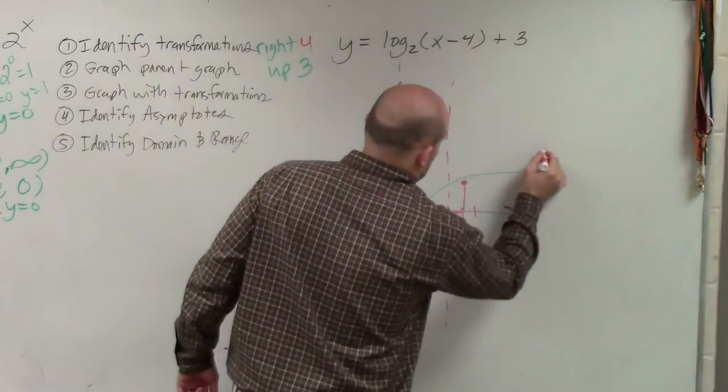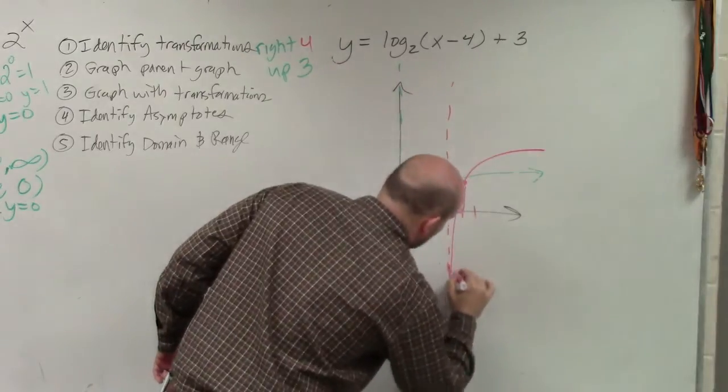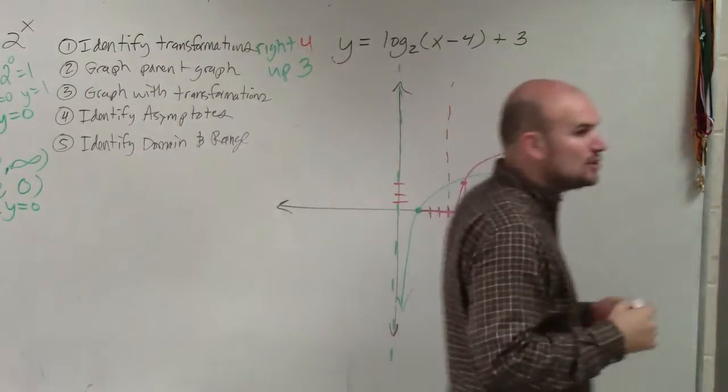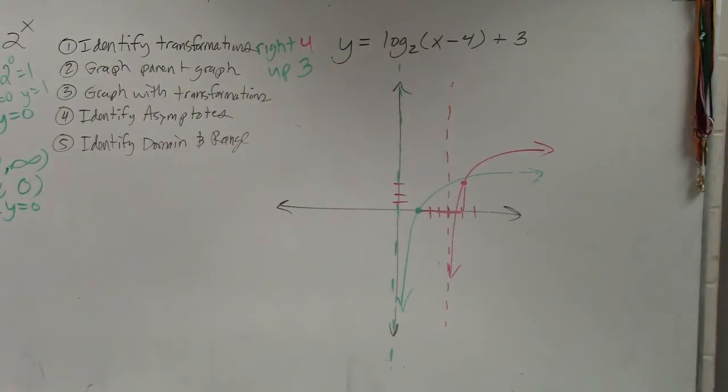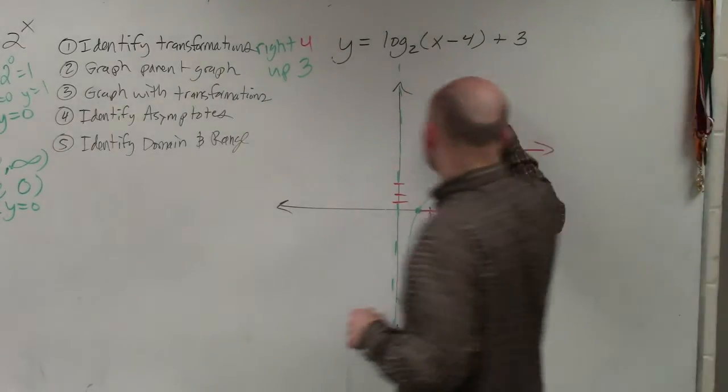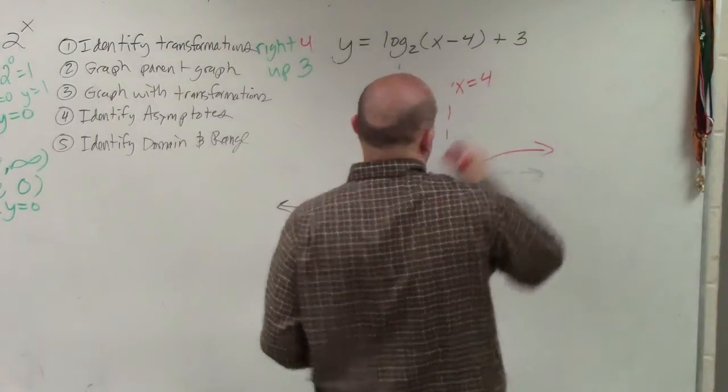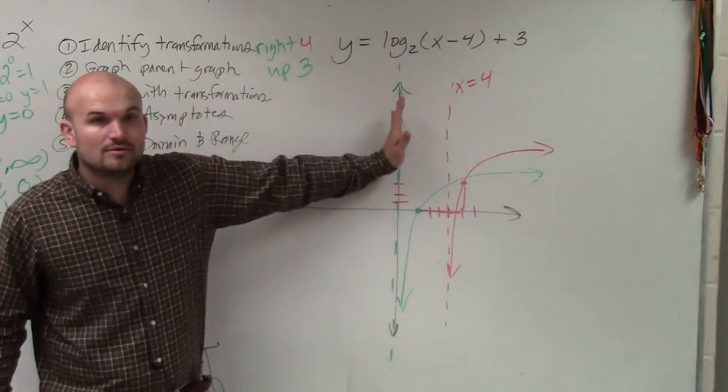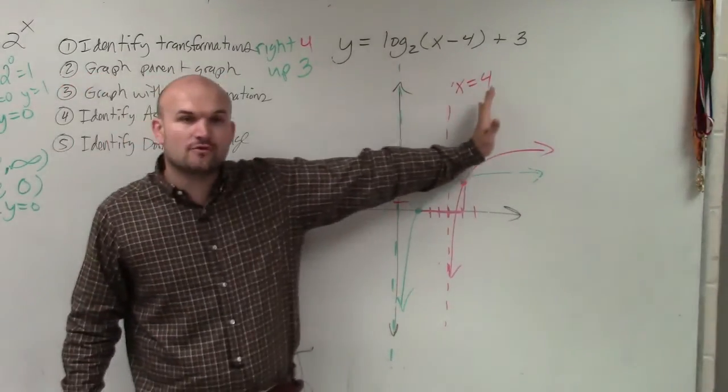Your graph approaches the asymptote. So when I go to graph this, I want to make sure that my graph does not cross over my asymptote. Right? So it's very important when you're moving your graph, make sure you redraw what the asymptote is. Bless you. So the asymptote is now x equals 4. It was at 0, but I shifted the graph 4 units to the right.